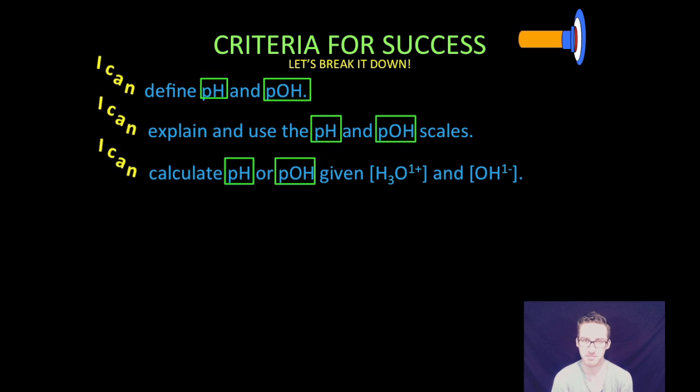Breaking it down as always, first thing we're going to do is define pH and pOH. What are those things? Maybe you have heard of them, maybe you have not. Two, we are going to explain and use the pH and pOH scales. And then three, we are going to calculate pH or pOH given either hydronium ion concentration or hydroxide ion concentration.